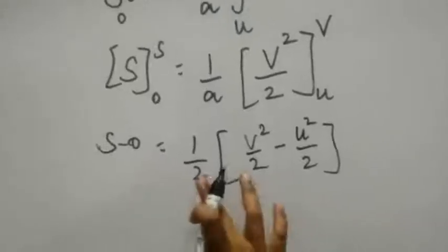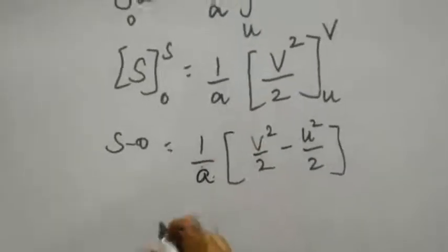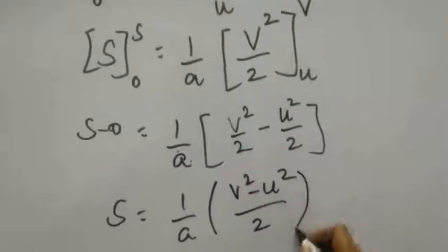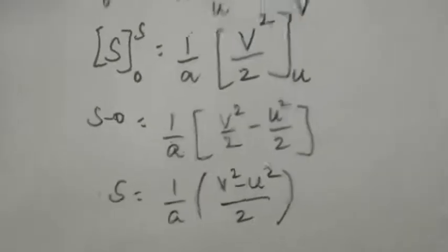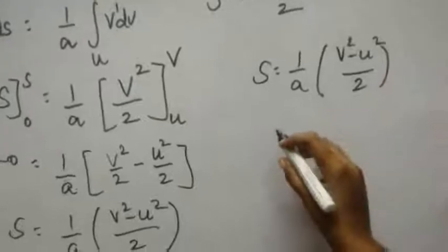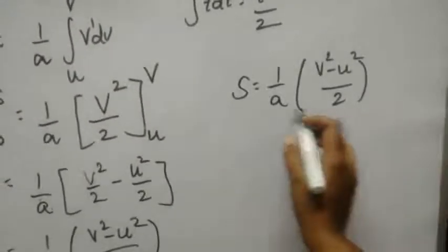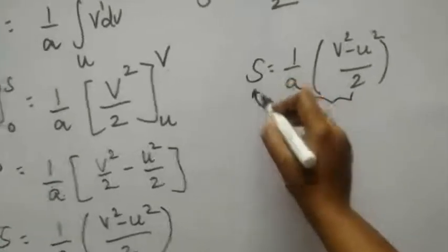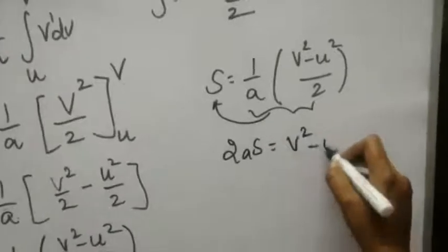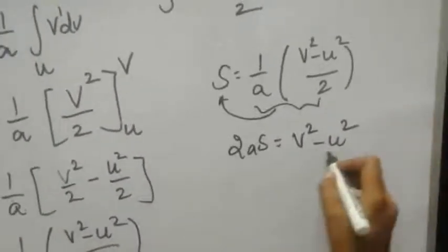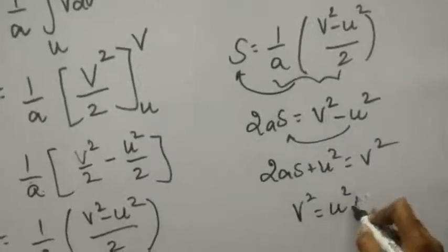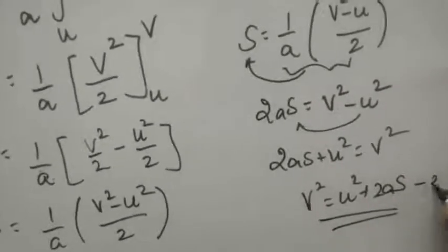So we have s equals (1/a) times (v square minus u square) by 2. Bringing 2a to the other side by multiplication: 2as equals v square minus u square. Bringing u square to the other side: 2as plus u square equals v square, that is v square equals u square plus 2as. This is the third equation of motion.